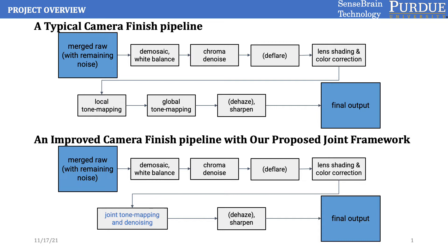In a typical cell phone camera's finishing pipeline, the denoised raw image will go through three steps including demosaicing, white balancing, chroma denoise, lens shading and color corrections, as well as local and global tone mapping. Such pipeline is adequate for most scenarios, but in some special cases, such as an under-display camera, it will not work so well. This is because photos taken by these under-display cameras often suffer from lower signal-to-noise ratio, and commonly used image denoisers such as burst denoising might not be enough to remove this noise completely.